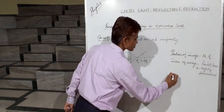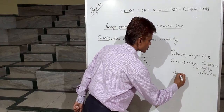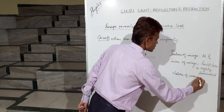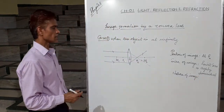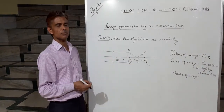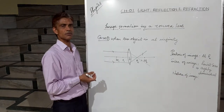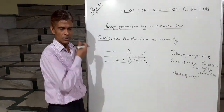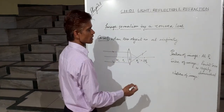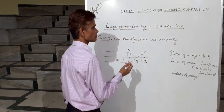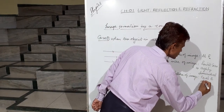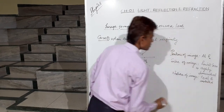Now, the nature of the image. If real rays meet after refraction, then a real image is formed. If virtual rays meet after refraction, then a virtual image is formed. Here real rays are converging, so a real and inverted image is formed.